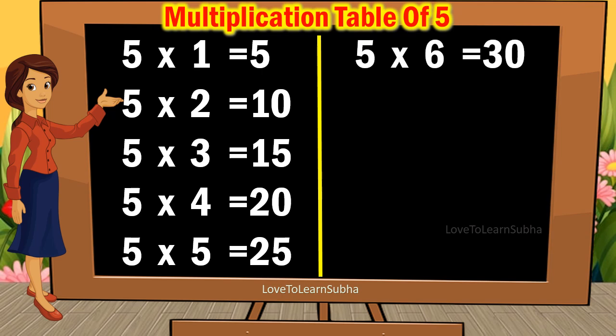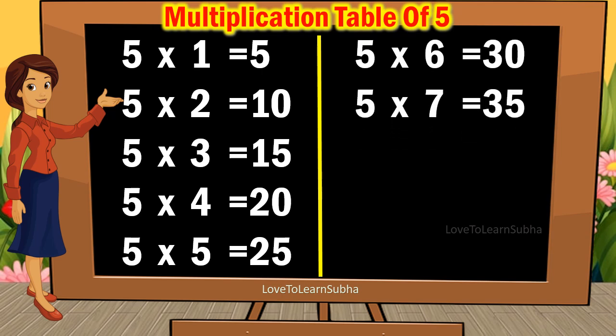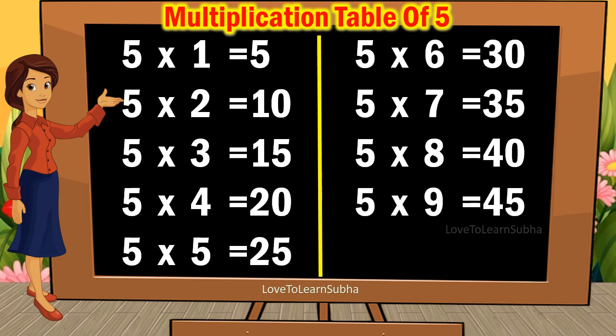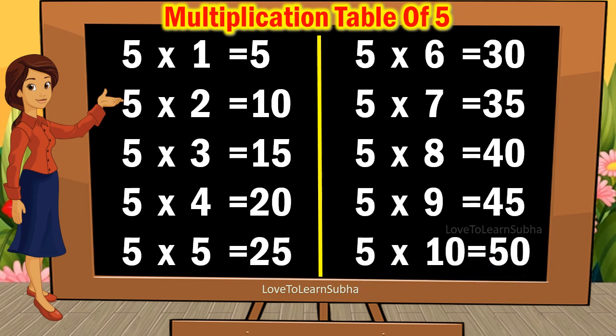5 6s are 30. 5 7s are 35. 5 8s are 40. 5 9s are 45. 5 10s are 50.